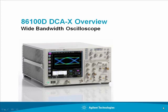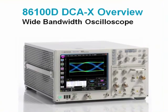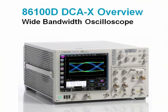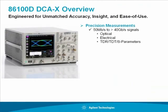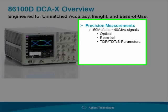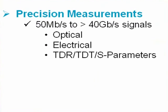Hi, this short video will provide you with an overview of the 86100D DCAX wide bandwidth oscilloscope. The DCA's modular architecture allows it to perform precision measurements on both optical and electrical signals. It can also be configured to perform TDR, TDT, and S-parameter measurements.